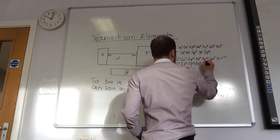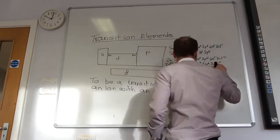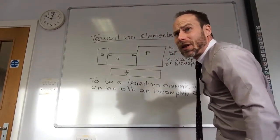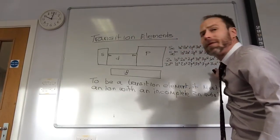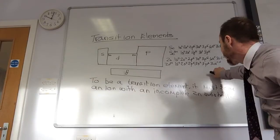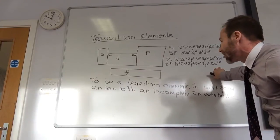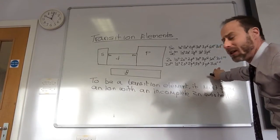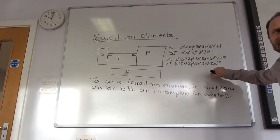4s. Zinc 2+: 3p6, 3d10. Does he have an incomplete D subshell? No. No, it's full up. He's got all his D subshell. D can hold 10 electrons. He's got 10 in there. It's not incomplete. It's complete. So, he is not part of the gang.